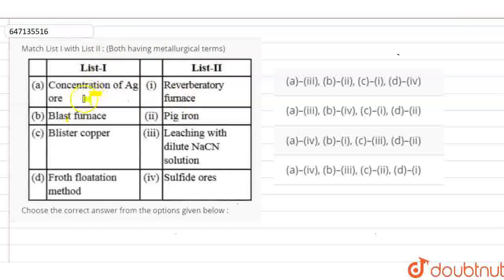Concentration of Ag ore, Blast Furnace, Blister Copper, Froth Flotation Method. In the list 2: Reverberatory Furnace, Pig Iron, Leaching with Dilute NaCN Solution and Sulphide Ores.